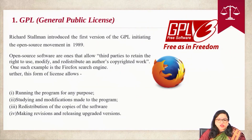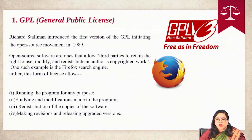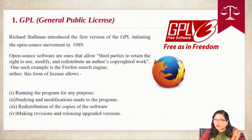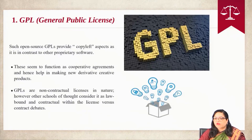Richard Stallman introduced the first version of the GPL, initiating the open source movement in 1989. Open source software are those that allow third parties to retain the right to use, modify and redistribute the author's copyrighted work. One such example is the Firefox search engine. This type of license allows running the program for any purpose, starting and making modifications, distributing copies of the software, and making revisions and releasing upgraded versions. Such open source GPLs provide copyleft aspects in contrast to proprietary software.